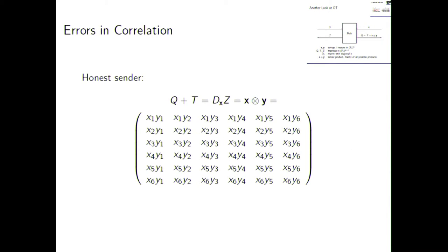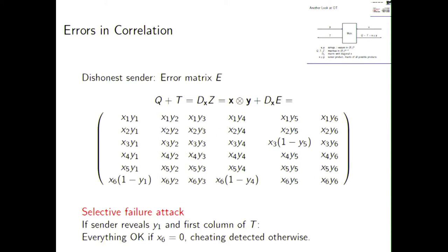And this essentially explains how we can get from kappa OTs of length N to N OTs of length kappa. Because we just turn things around. So, now we want to go from passive security to active security. So, this is kind of a repeat. In the case of an honest sender, the two outputs, called Q and T, form a random secret sharing of the tensor product of X and Y. So, this is how such a matrix would look like for a bit length 6 of X and Y. Now, if we have a dishonest sender, this can be formulated as follows.